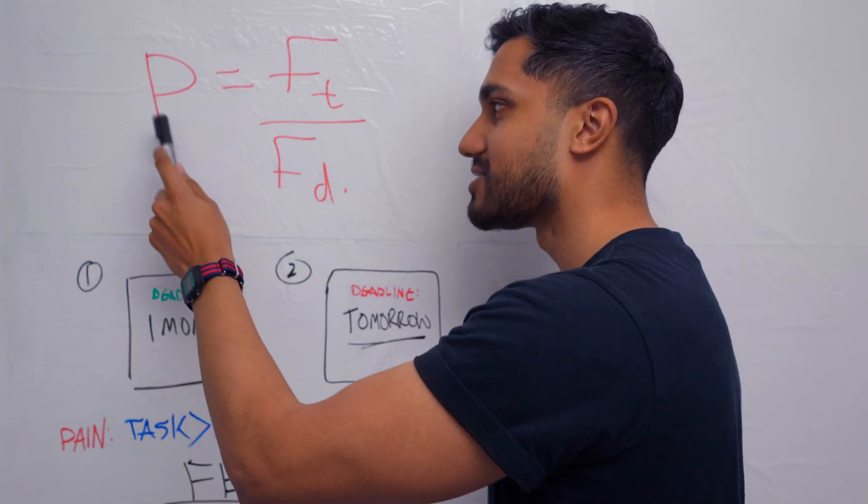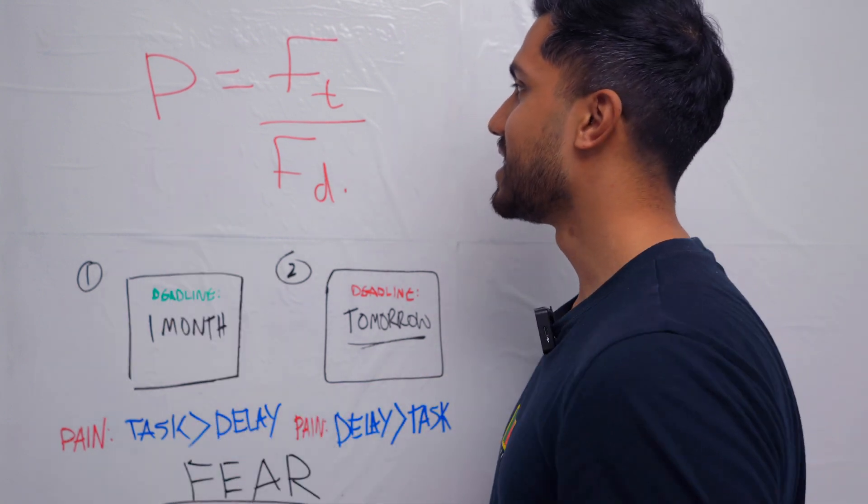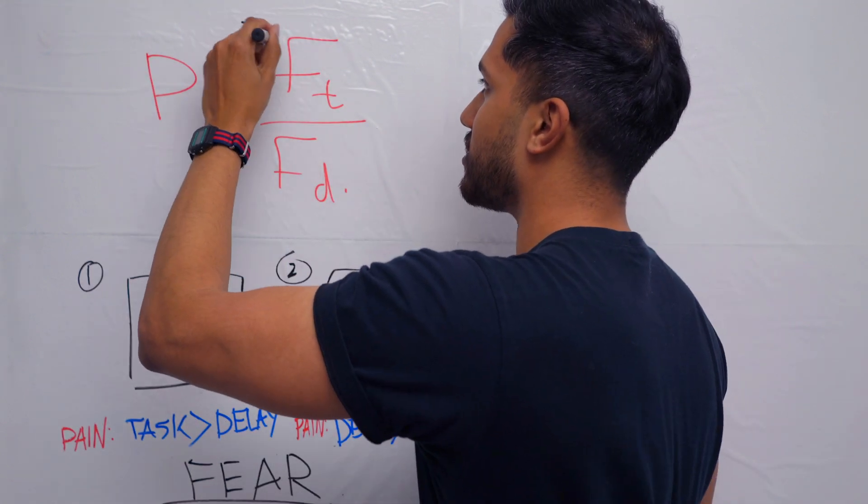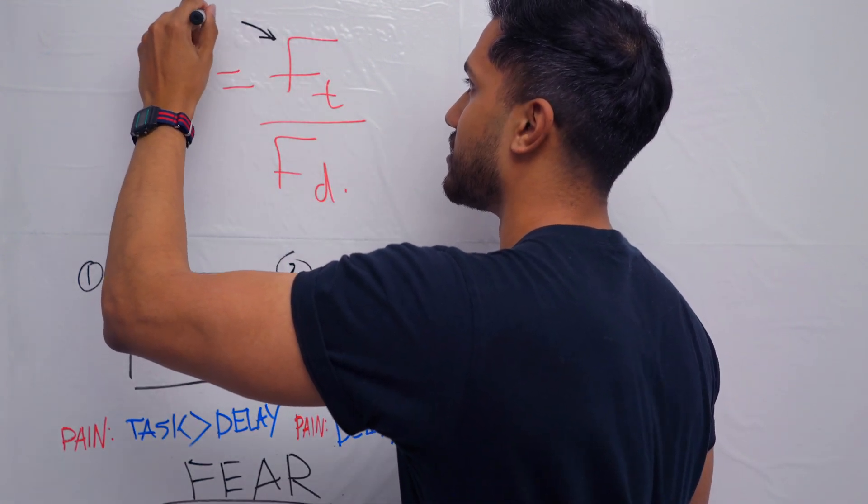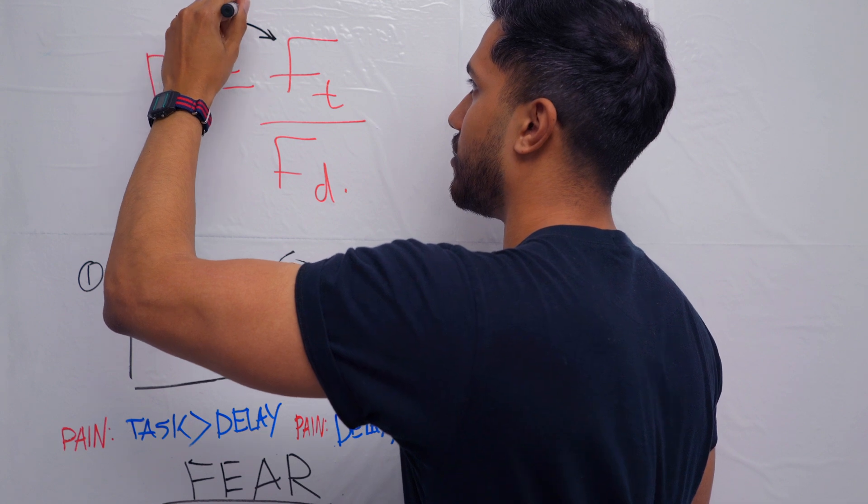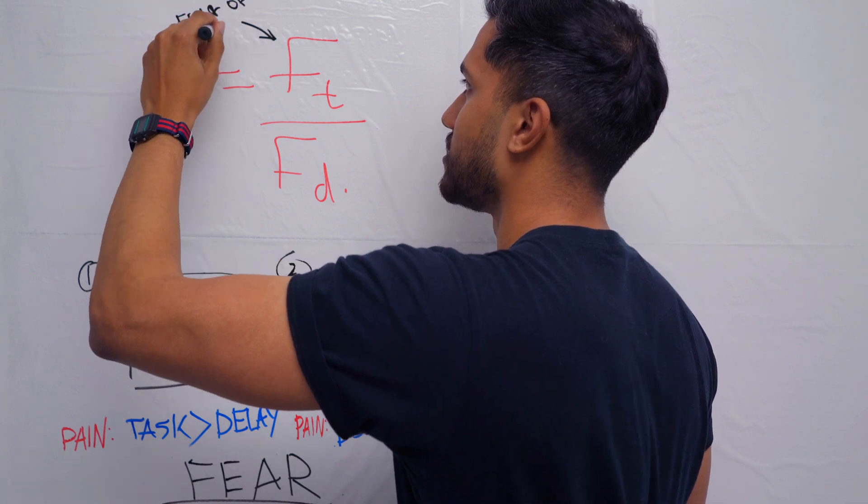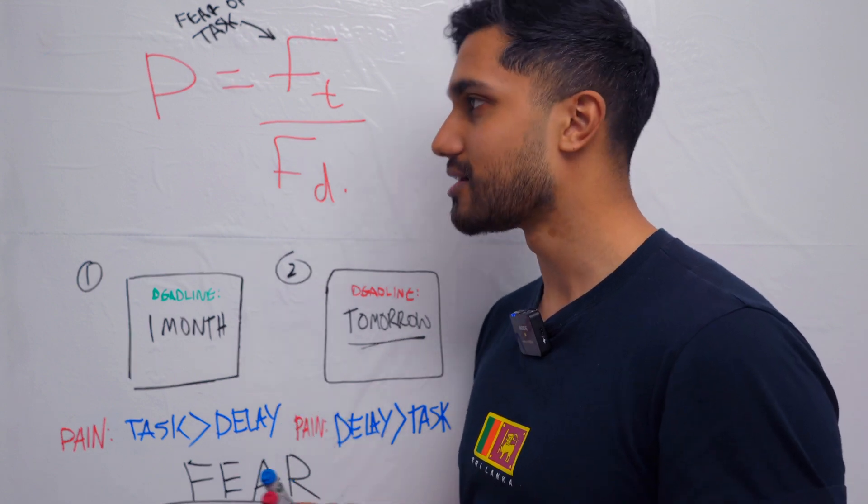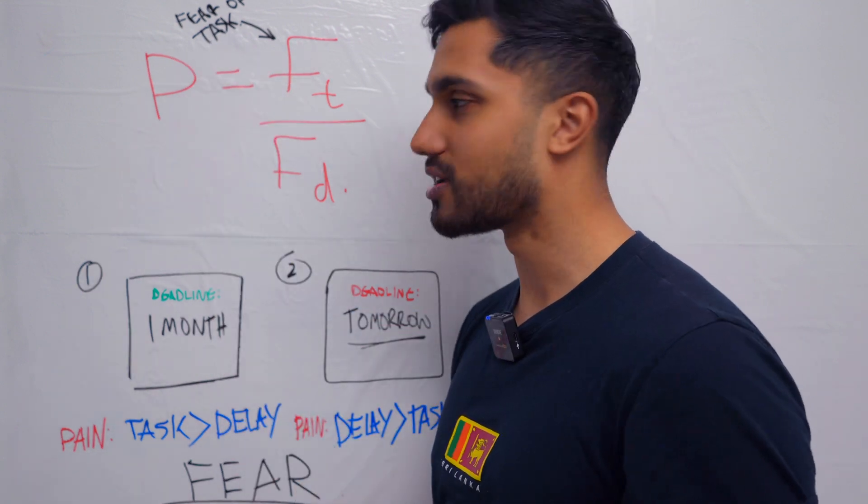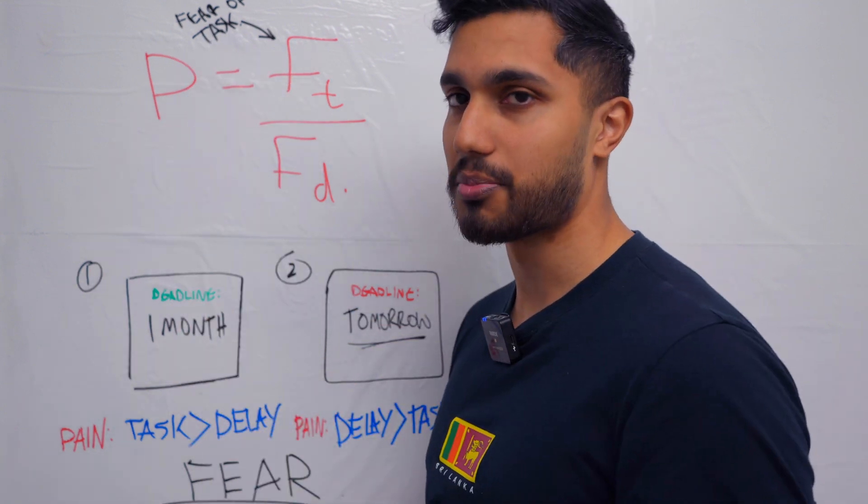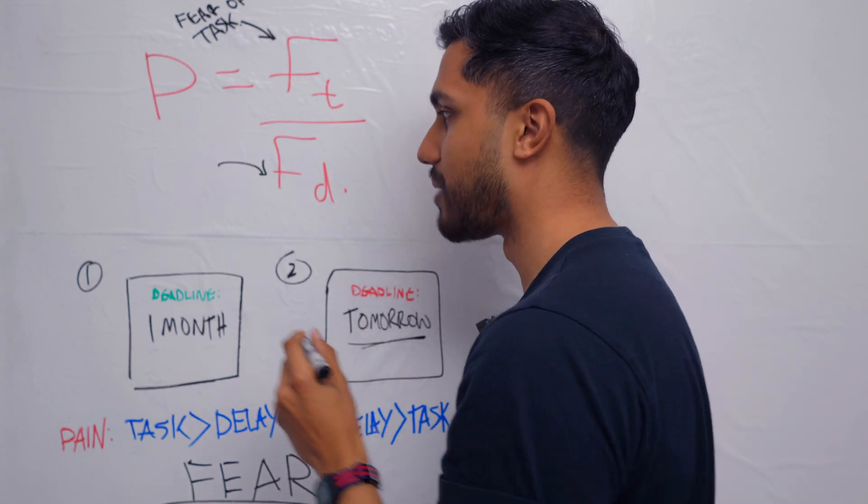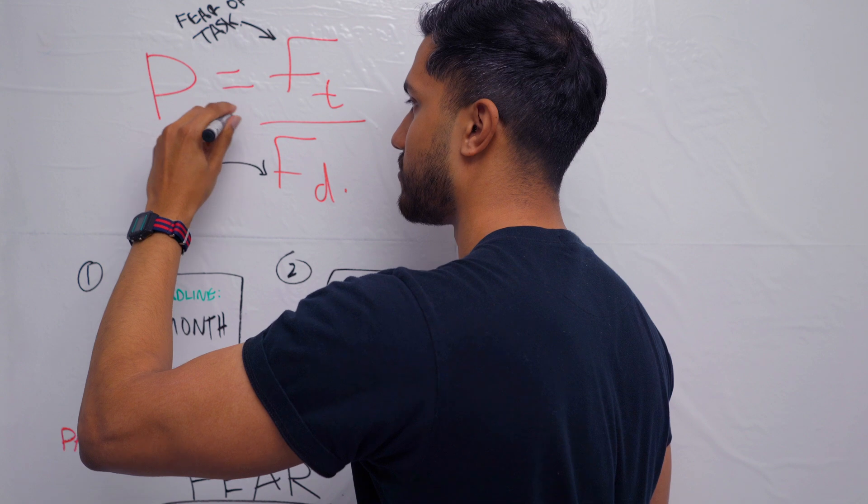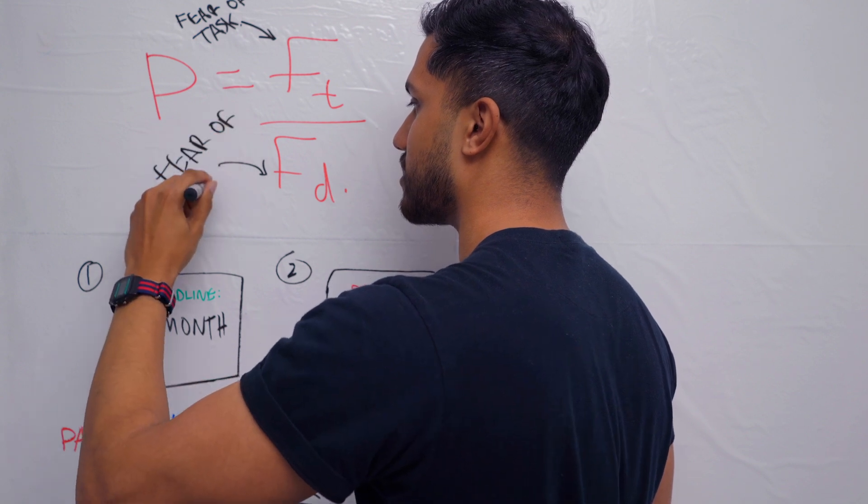Fear is what you feel when you expect something to be painful. And so, procrastination, P, is directly related to the fear of the task. When you know it's going to be boring, and so the more boring it is, the more uncomfortable it is to do the task, the more likely you are going to procrastinate it, divided by the fear of the delay.